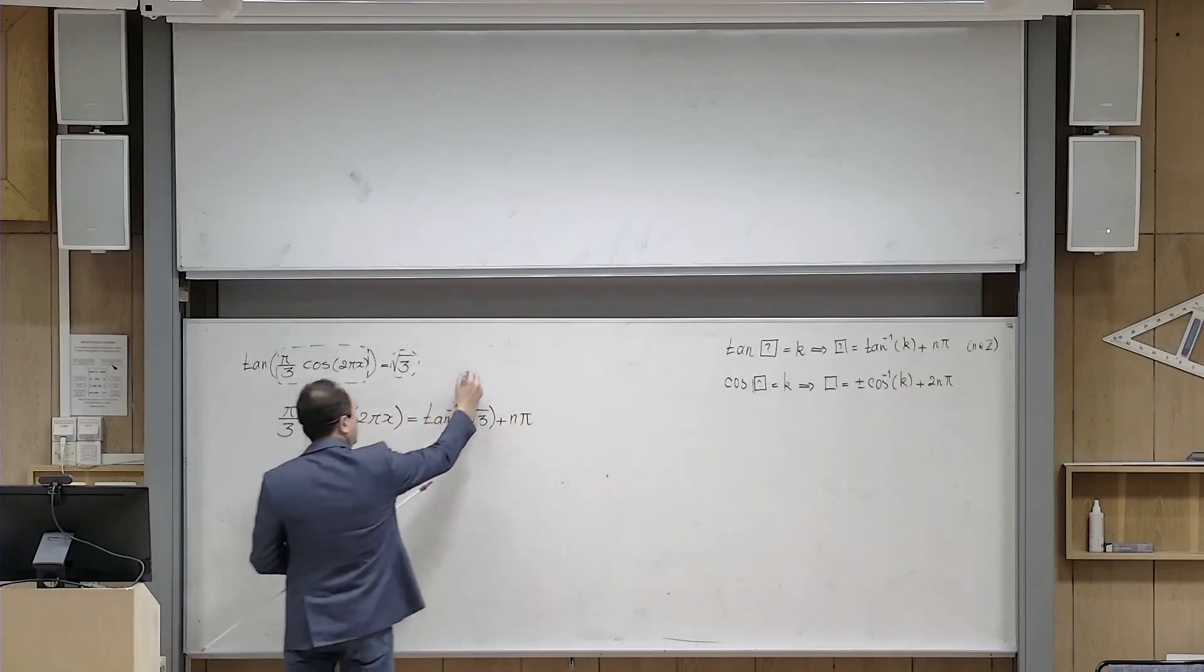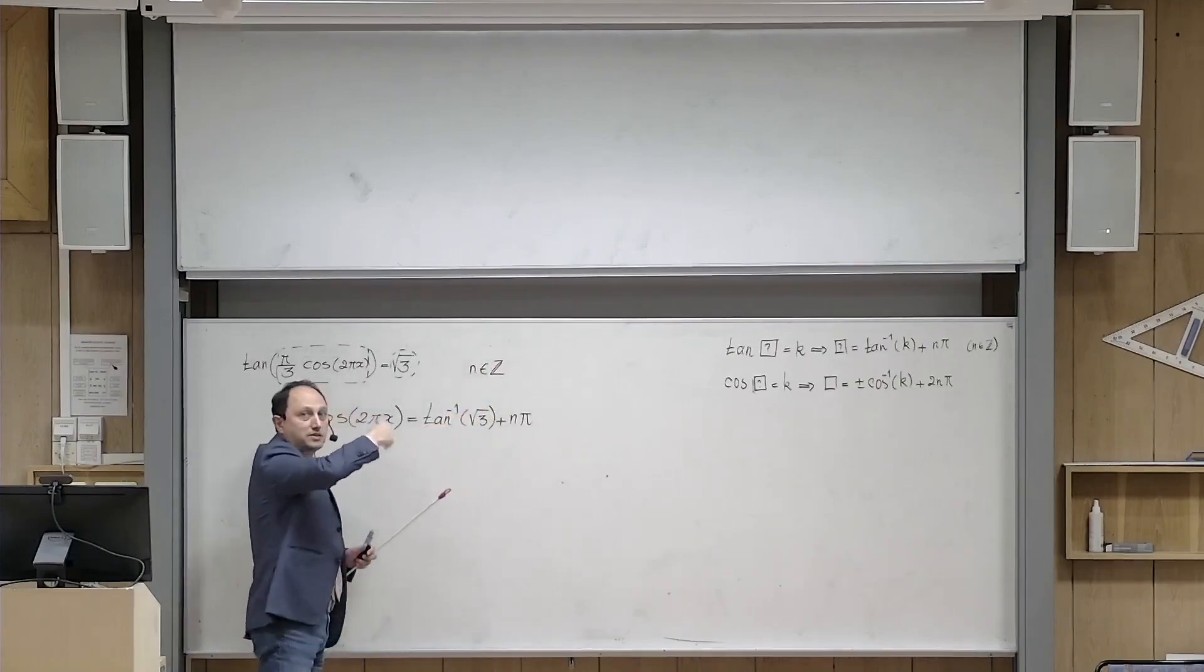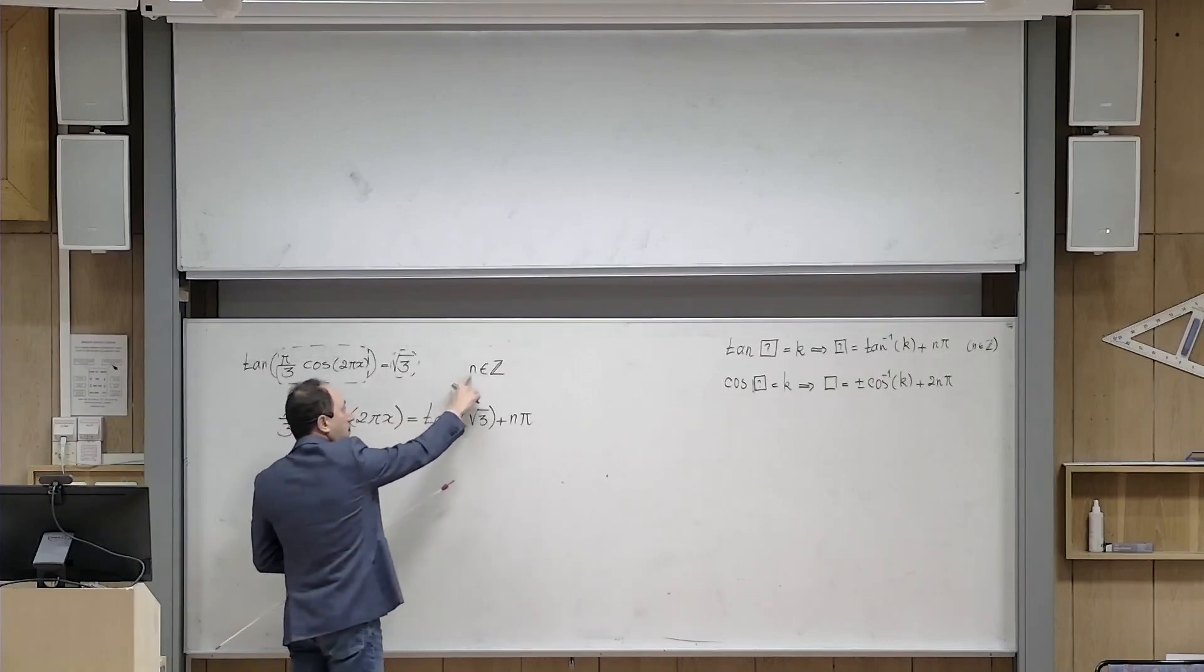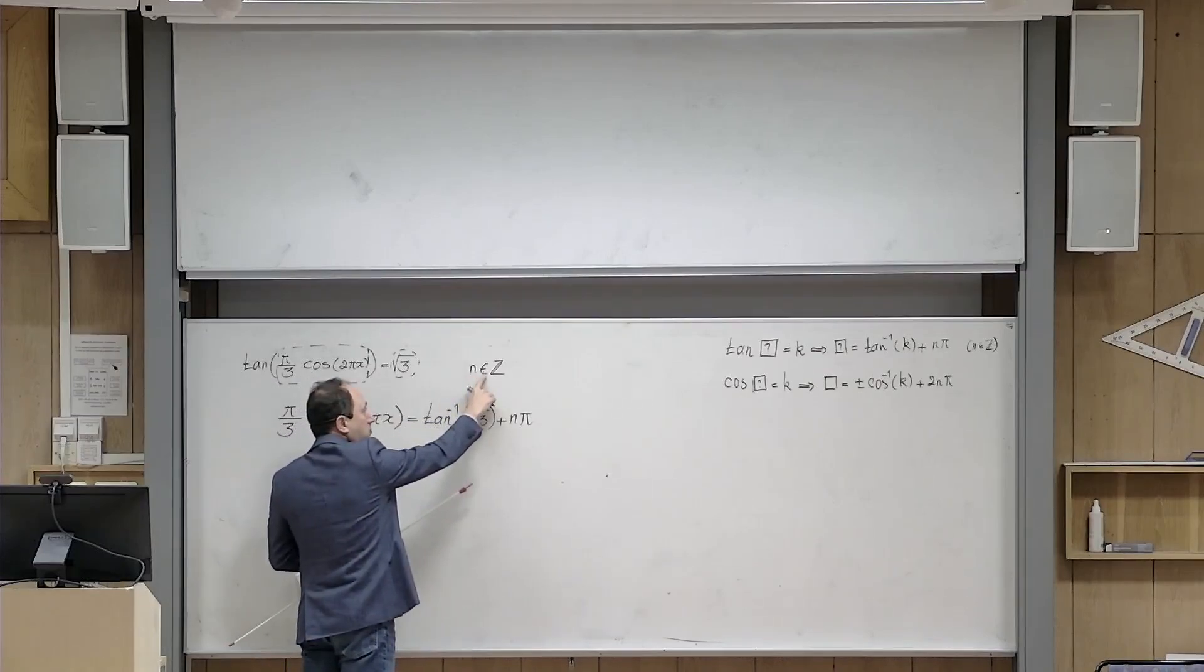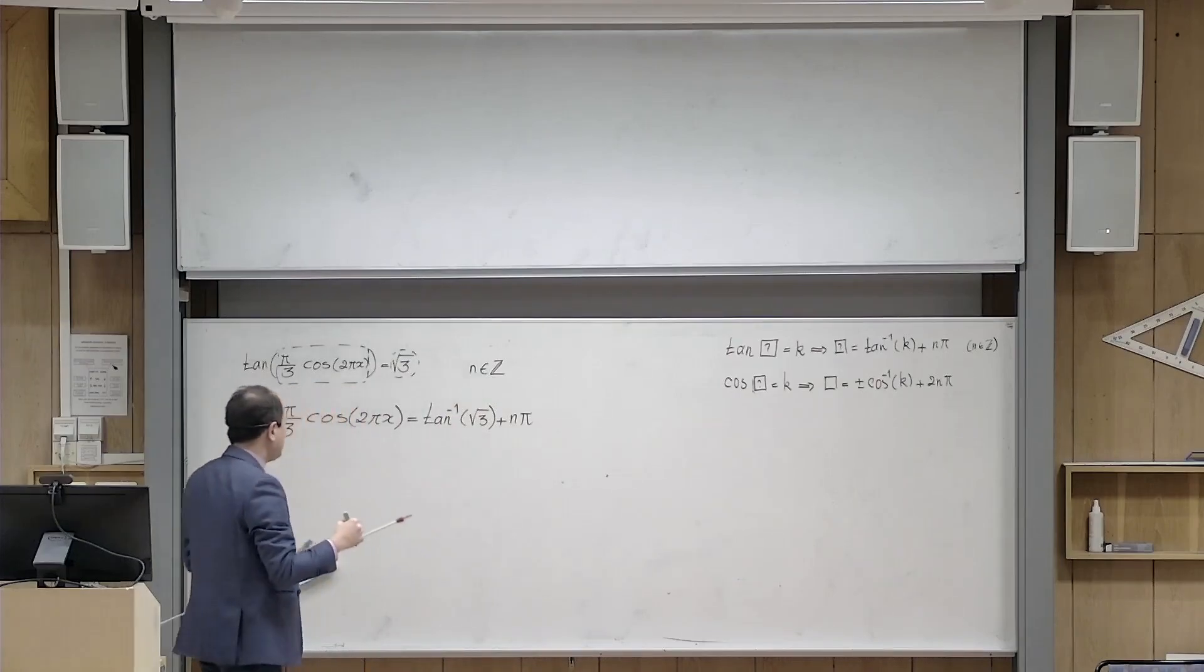I emphasize again here that n is an integer, so I'm using this symbol z, the set of all integers, and n belongs to the set of all integers.